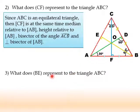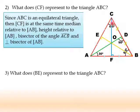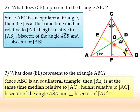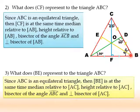What does BE represent to triangle ABC? We are still in an equilateral triangle. As we said about CF, we can also say about BE. It's at the same time a median relative to CA, a height relative to CA. Since BE is perpendicular to segment CA at its midpoint, it's at the same time a perpendicular bisector of CA, and it's also a bisector of angle CBA.